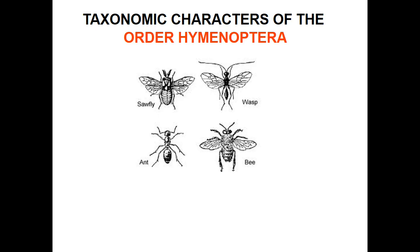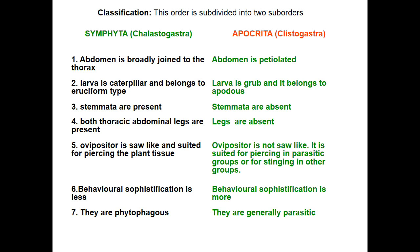This lecture is a continuation of the previous lecture on identification of wasps, bees, and other Hymenopteran insects, Part 2. We have seen order characters in the last class; this class starts with the families of both suborders: Symphyta and Apocrita.